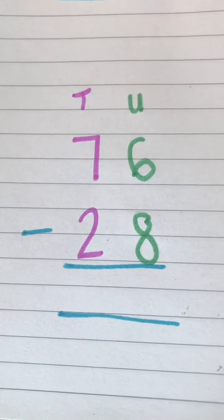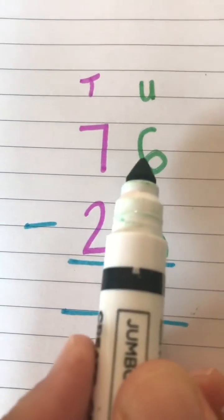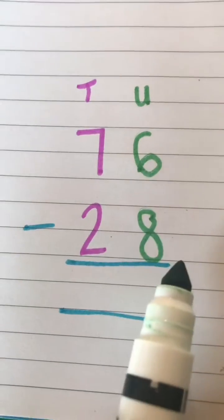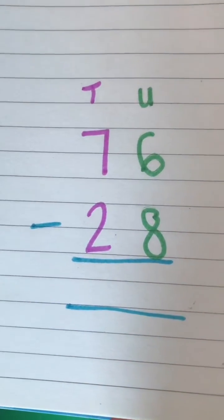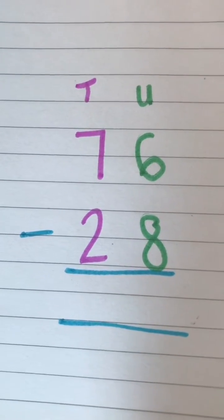and you can't just switch it around. You can't just say 8 minus 6, because that's not what my sum is. My sum is 6 minus 8, and I don't have enough. So what I'm going to do is I'm